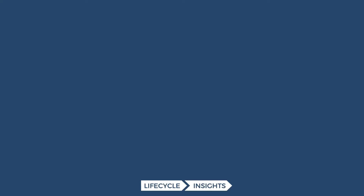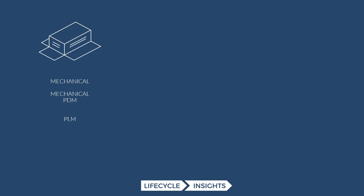Let's talk about how the artifacts in each of these domains are managed. For mechanical design, you have mechanical PDM — workgroup data managers that align with each CAD system — and then PLM sits on top of those, connecting to multiple PDMs. PLM drives and automates the execution of the product development process for mechanical hardware. Then for software, you have software configuration management tools — Git being one of the most popular — managing code iterations across developers. And then you have ALM, which manages the overall development process for approvals and automated testing.